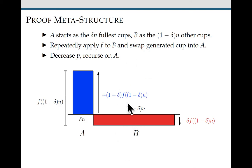The way that we're going to do that is by applying f to b, roughly speaking, and then taking the cup within b that was just generated to have high fill and swapping it into a. After a has this high average fill, we can decrease p and recurse on a, and thus get even higher average fill in a subset of a.